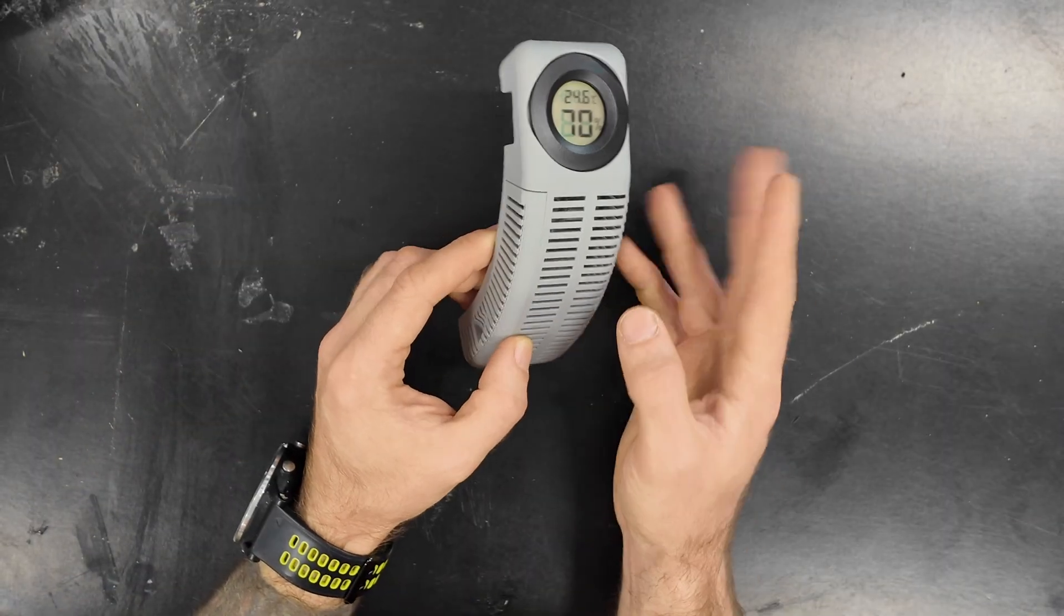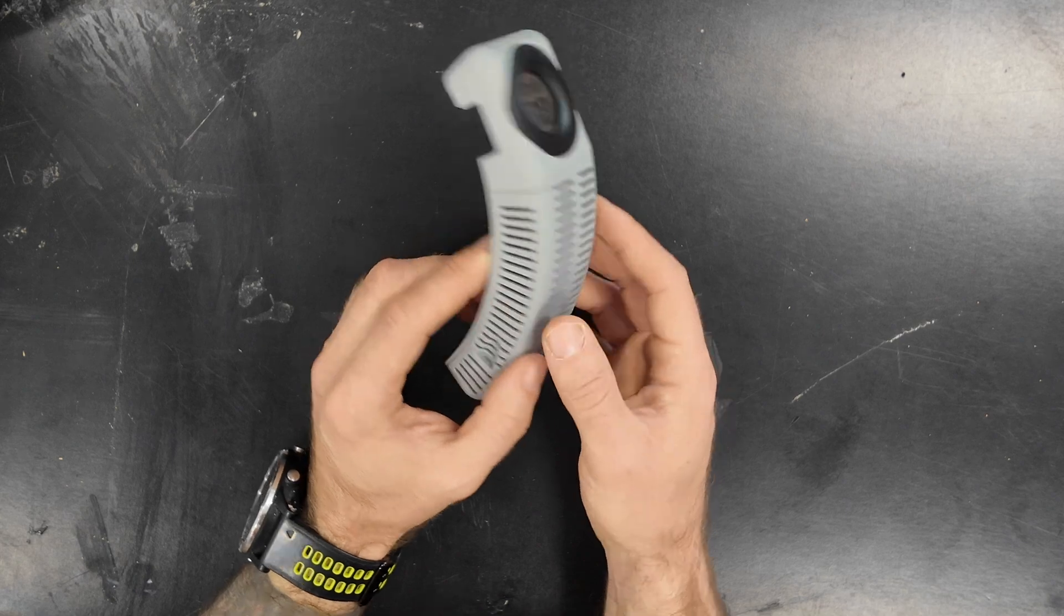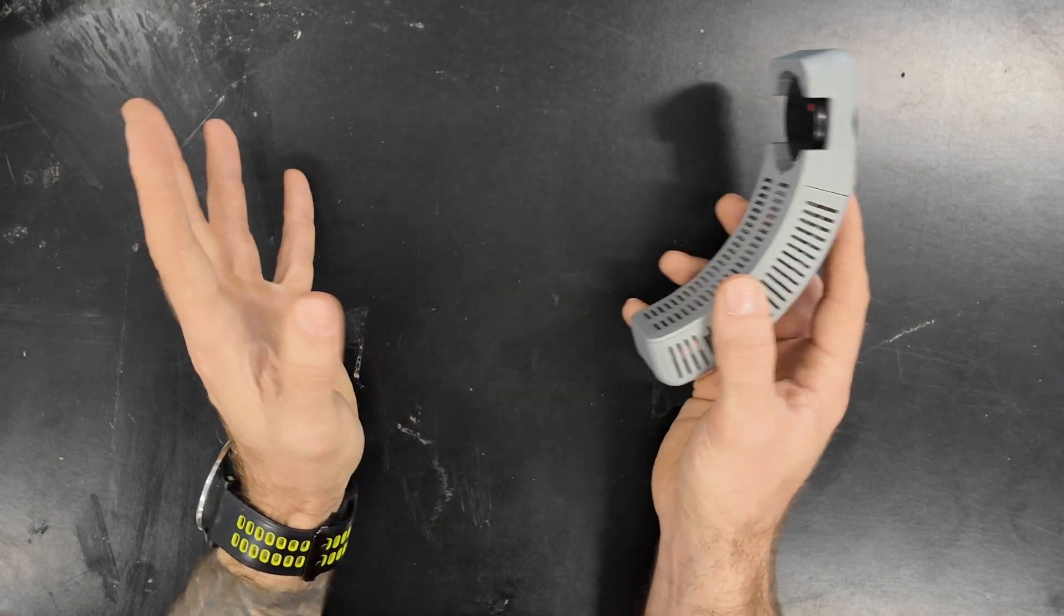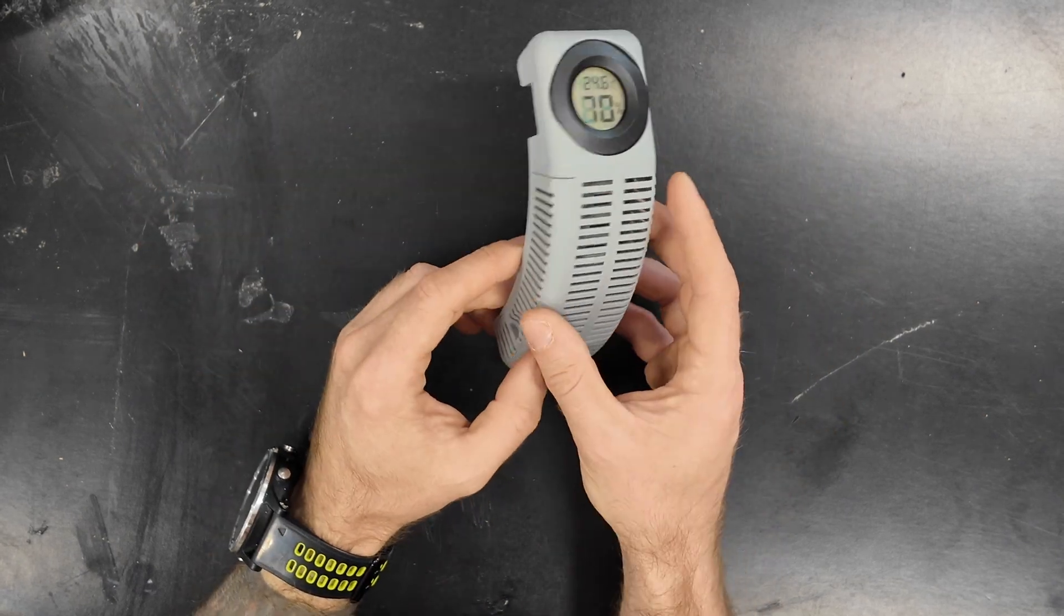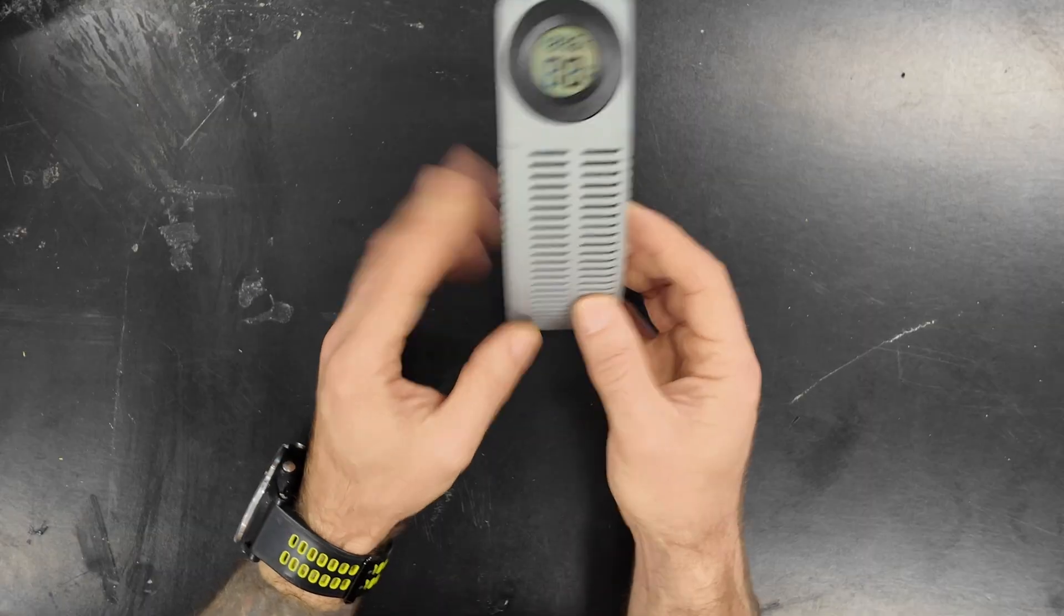So throw in some desiccant, around 75 grams or so, slap in the hygrometer, push it on the side of the spool and vacuum pack the spool as you usually do. Done.